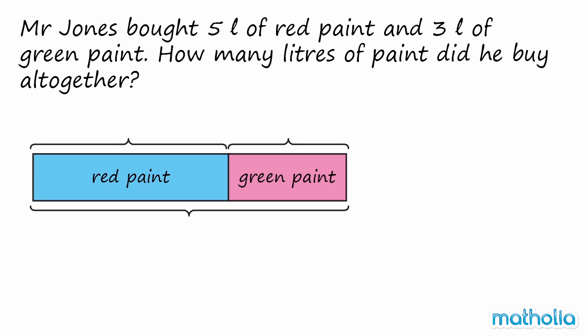Let's use a model to help solve the problem. We know that Mr. Jones bought 5 litres of red paint and 3 litres of green paint. We need to find the total volume of paint that Mr. Jones bought. We have to add the numbers together.